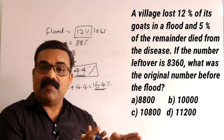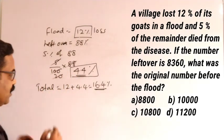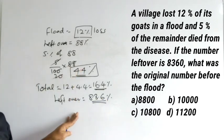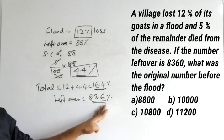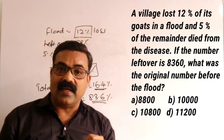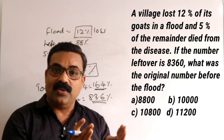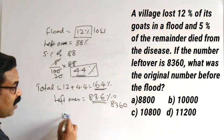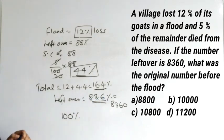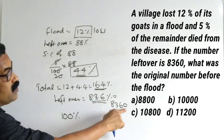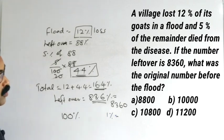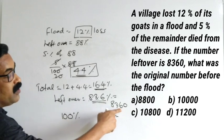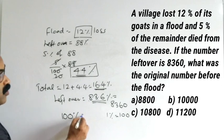So what will be the left over? 100 minus 16.4 equals 83.6. Left over is 83.6 percentage. This is a very important step — 83.6 percentage is left over, and the left over cows given in the question are 8360. So 83.6 percentage equals 8360. We need to find what 100 percentage equals. One percentage will equal 8360 divided by 83.6, which gives 100.